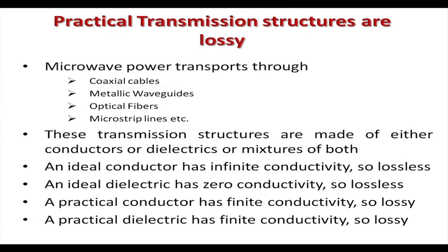Practical transmission structures are lossy. Microwave power transports through coaxial cables, metallic waveguides, optical fibers, microstrip lines, and so on. These transmission structures are made of either conductors, dielectrics, or a mixture of both. Like a coaxial cable, you have two conductors which are metals, and between them is a dielectric — air or some dielectric material.